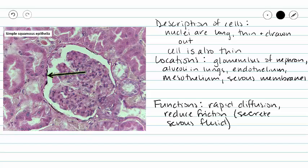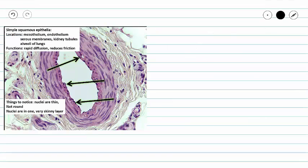Let's take a look at another place in our body where we see simple squamous epithelium. Here we have a blood vessel, and on the very inside of our blood vessel we see endothelium, which is our simple squamous epithelium. I'm pointing to a couple of nuclei here that are pretty thin and drawn out, and surrounding the entire inside of our blood vessel we see that simple squamous epithelium.